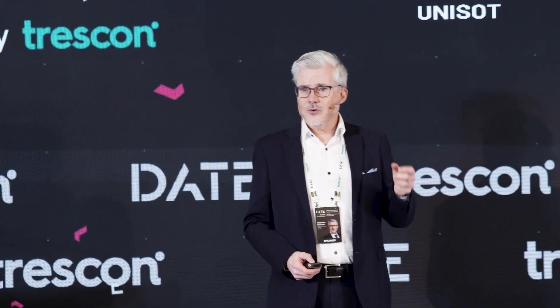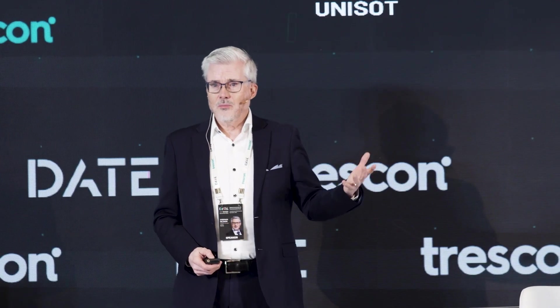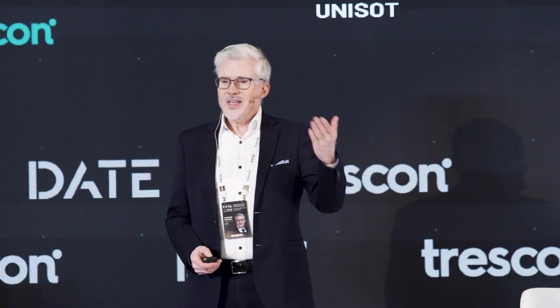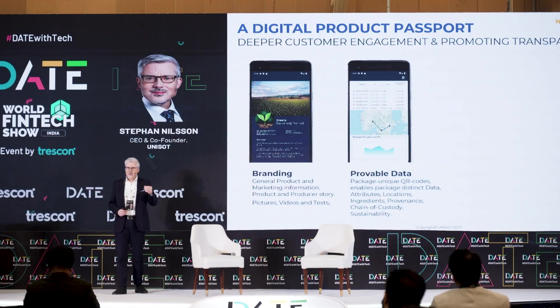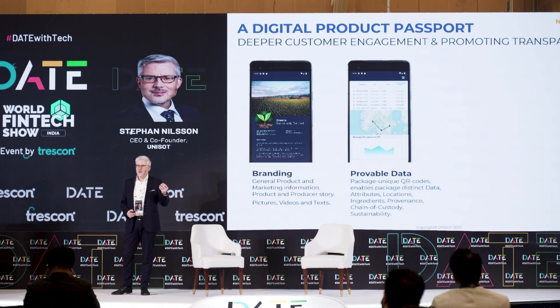That's nothing new — a lot of products today already have a QR code that leads to a static web page, which is rather boring. But what we add is provable information. Because we use the public blockchain as a global data layer, all the information can now be proven, and every actor is liable for the information they put in there. We can present provable information: prove every ingredient, prove the origin, prove the temperatures.